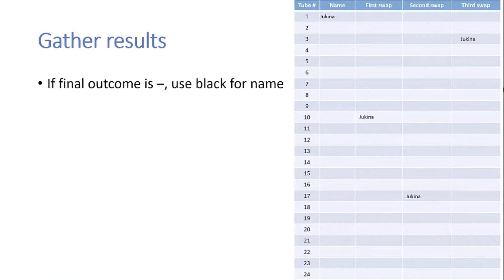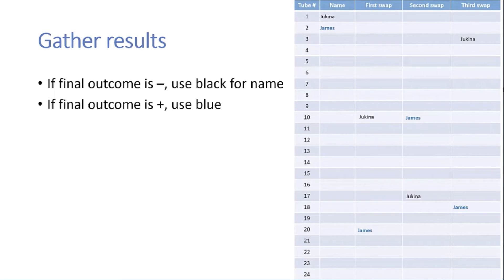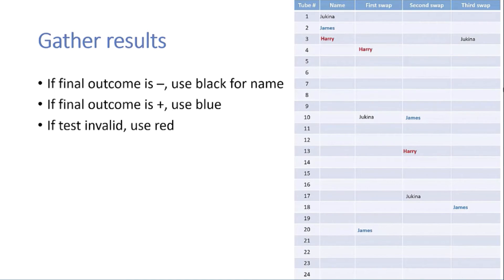A blue color indicates positive test results. For example, James had tube number 2 and writes his name in blue. He also writes his name at number 20, which he swapped with first; number 10, which he swapped with second; and number 18, which he swapped with third. Any invalid results are indicated in red — such as Harry, tube number 3, who writes his name in red for the first, second, and third swap.